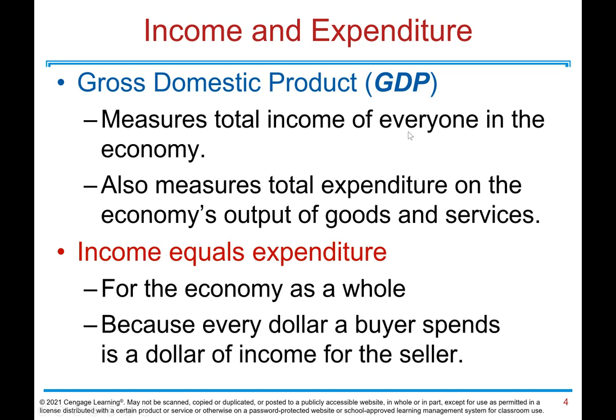Income and Expenditure. Gross Domestic Product or GDP measures total income of everyone in the economy. It also measures total expenditure on the economy's output of goods and services. Therefore, income equals expenditure for the economy as a whole, because every dollar a buyer spends is a dollar of income for the seller.